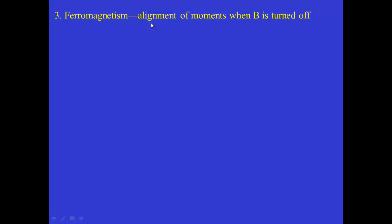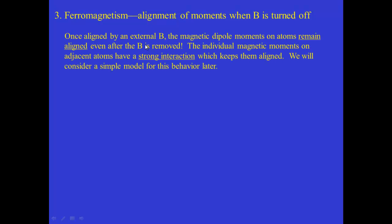Finally, a few words about ferromagnetism. Ferromagnetism is when you apply an external field to line up the individual magnetic dipole moments of the atoms, and they stay lined up even when the magnetic field is turned off. This implies that the individual magnetic dipole moments on adjacent atoms inside the material interact with each other very strongly, so that once lined up, even when the external field is removed, they keep each other aligned. A little later, near the end of the chapter, we'll consider a simple model for how this behavior occurs. That gives you a basic overview of paramagnetism, diamagnetism, and ferromagnetism, and we'll jump into the magnetic field produced by a magnetized object in the next section.